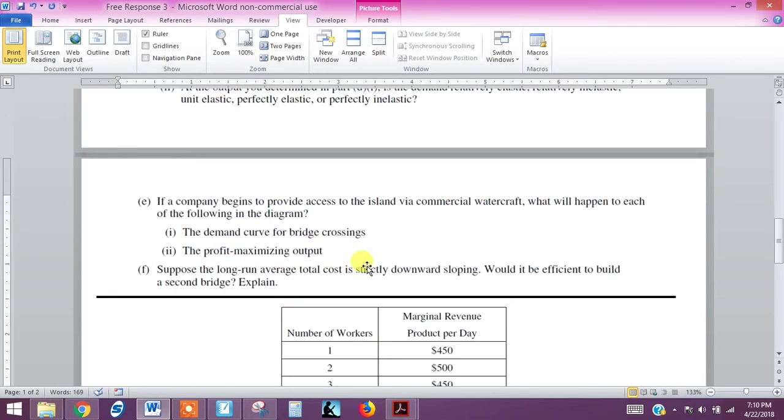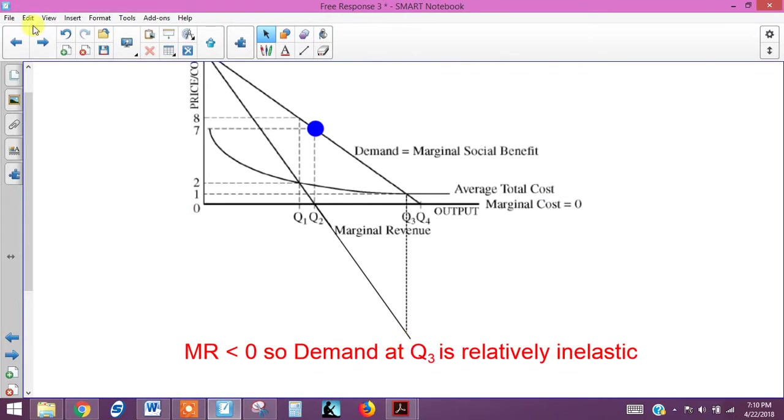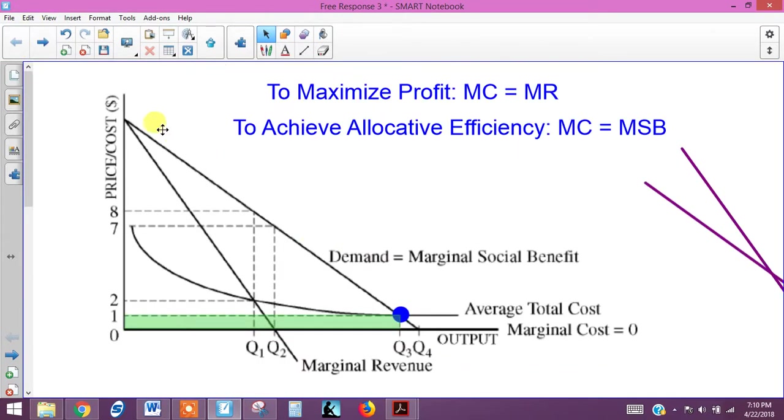Part E, if a company begins to provide access to the island via commercial watercraft, what will happen to each of the following in the diagram? The demand curve for the bridge crossings and the profit maximizing output. Well, we can easily show that because if there's going to be a substitute, that is going to very simply shift the demand curve to the left because there will be less demand for using the bridge.